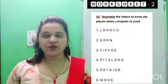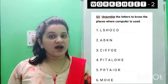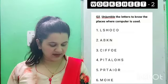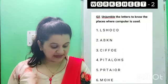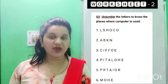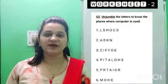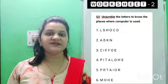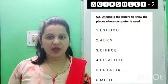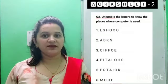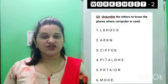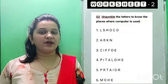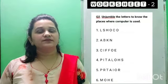Now children, let's proceed to question number two: unjumble the letters to find the places where computers are used. Here I am giving you six jumbled words. You have to unjumble them and write down the correct spelling of the word. The hint is that these are all names of places where computers are used. Just look at them, unjumble them, and write down the answer in front of each one.